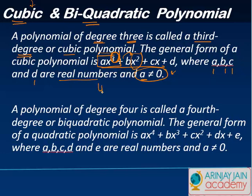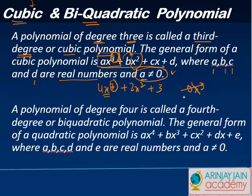For example, four x cubed plus two x squared plus three has a highest degree of three. But if the coefficient of x cubed is zero, we are left with two x squared plus three, which becomes not a cubic but a quadratic polynomial.